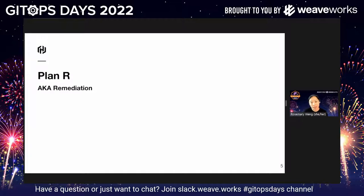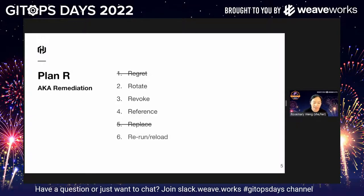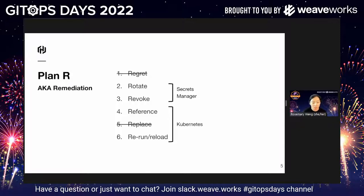Typically, when you have a compromised secret, you implement Plan R — that's my joke, it's plan remediation. The first step is usually you regret everything, you rotate, and you revoke the secret. But in the case of a secrets manager, it's also handling the referencing — you don't really need to be replacing those secrets. And in terms of a rerun and reload capability, that's something you would do on your platform or pipeline side. If you were to manually manage the secret, these are the six steps you'd typically go through. But in the case of a secrets manager, it handles rotation and revocation for you, and Flux handles the reload very elegantly.